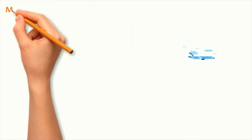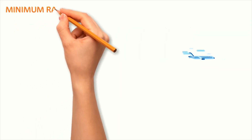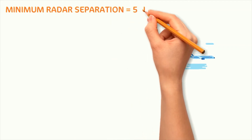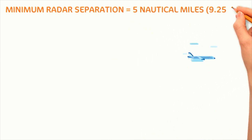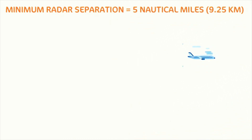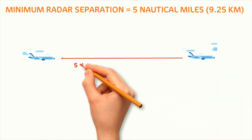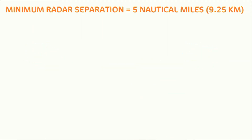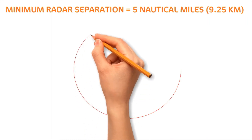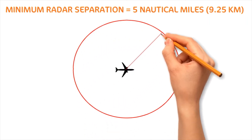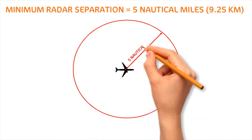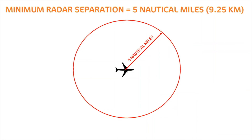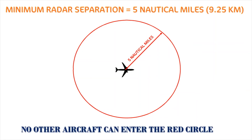Generally, when an aircraft is flying, the minimum radar separation is set at 5 nautical miles or 9.25 kilometers. That means another aircraft cannot come closer than 5 nautical miles or 9.25 kilometers in any direction. In other words, if a circle with 5 nautical miles or 9.25 kilometers radius is drawn keeping this aircraft as center, no other aircraft can enter this circle.